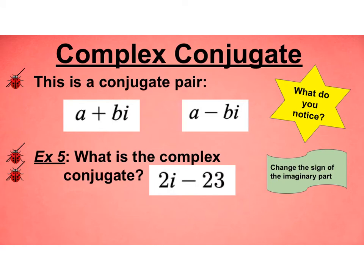In example 5, what is the complex conjugate of 2i - 23? Be careful, it's not quite in the order I gave you. Here's my imaginary part, and I want to change that sign. So the conjugate pair, the other piece would be -2i - 23.